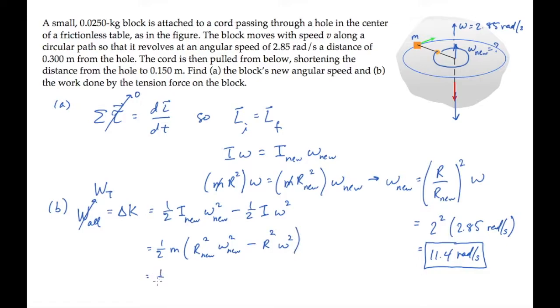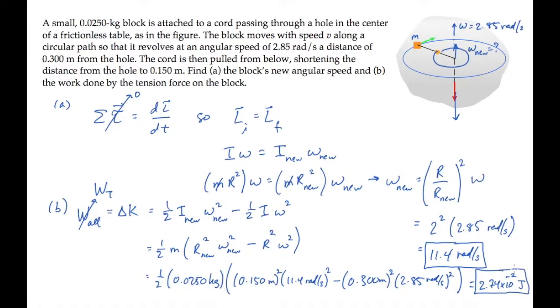Finally, substituting all the values and calculating, finding that the work done is 2.74 times 10 to the minus 2 joules. The work is positive because the block moved inward in the same direction as the tension force on the block.